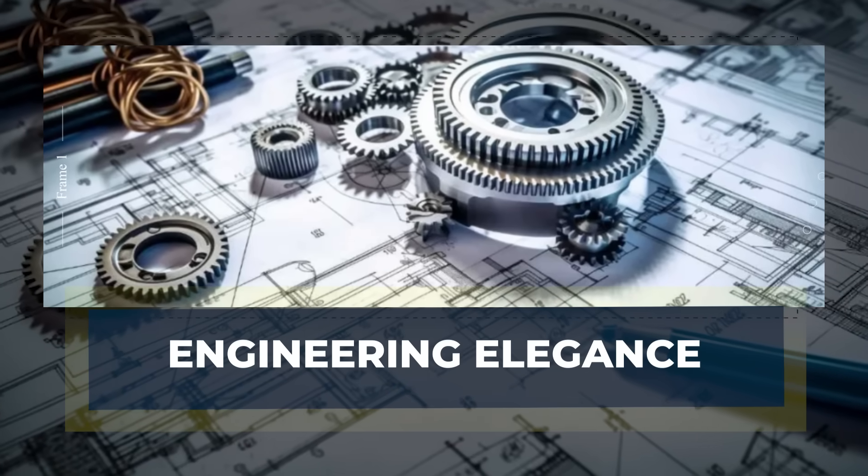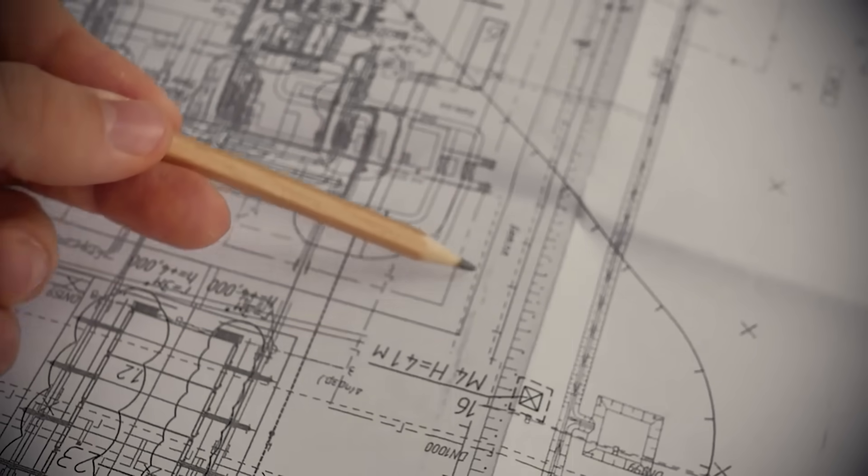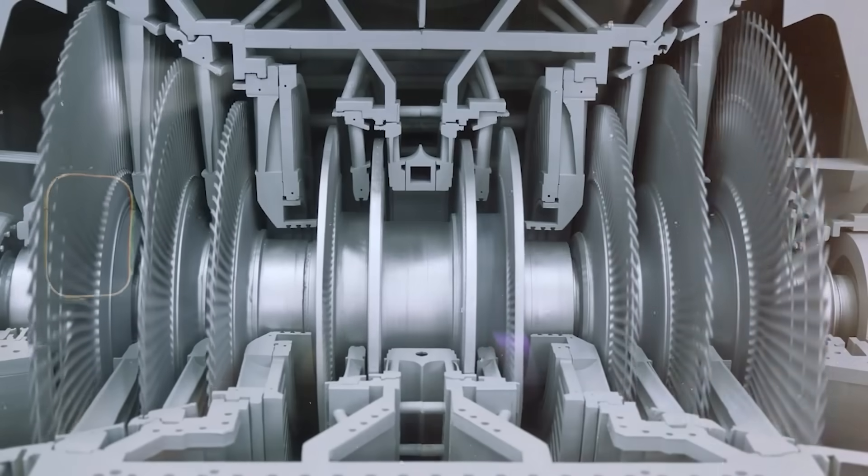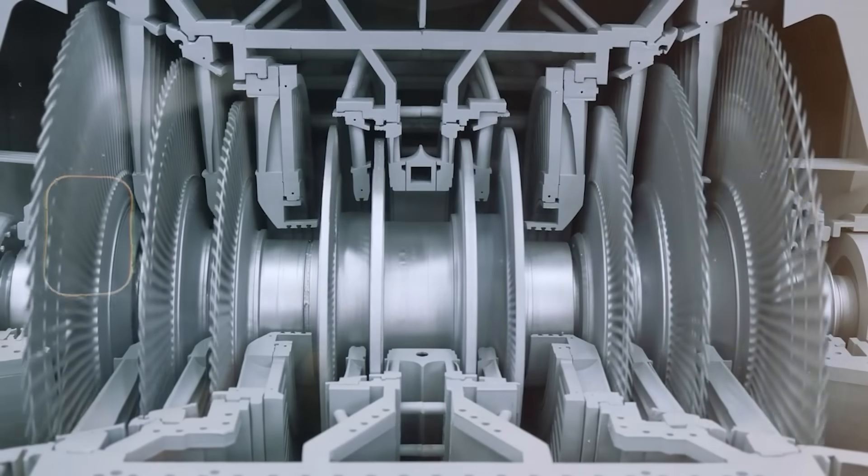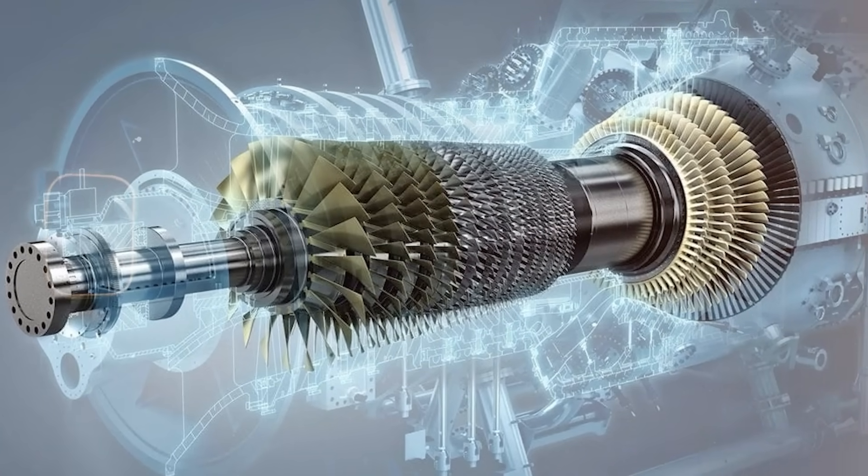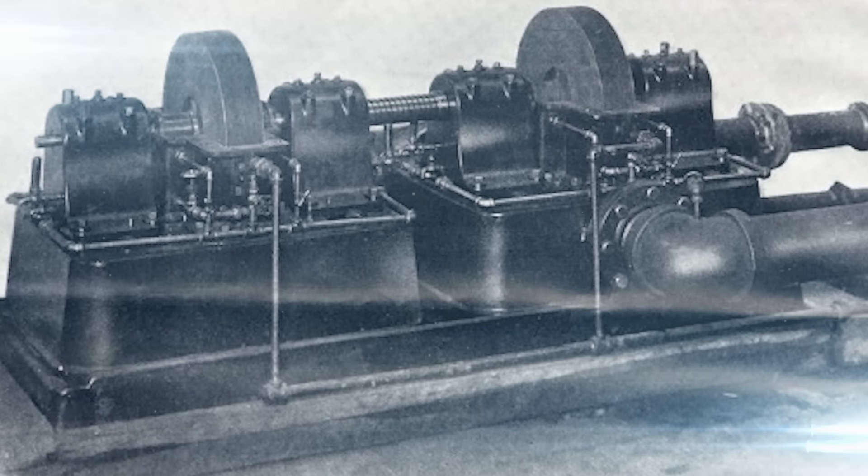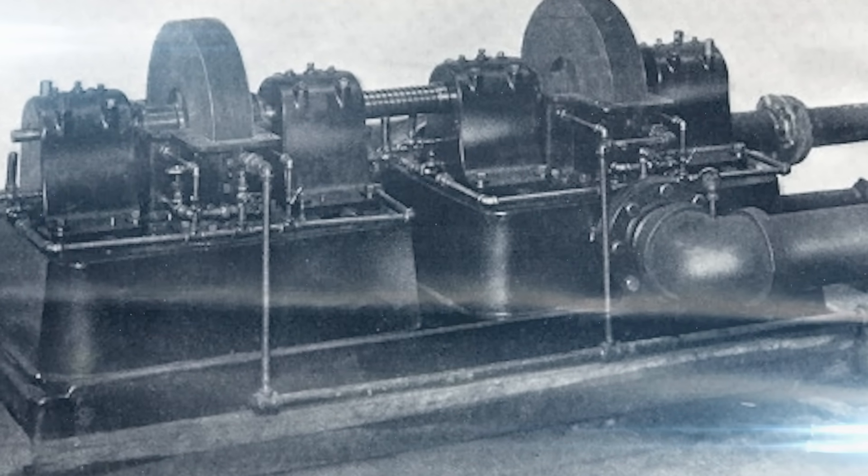Engineering elegance. What makes Charlie's design fascinating is its simplicity and resilience. Traditional turbines are finely machined, sensitive to impurities, and prone to erosion when exposed to wet steam or dust. The Tesla turbine, by contrast, thrives in such conditions.